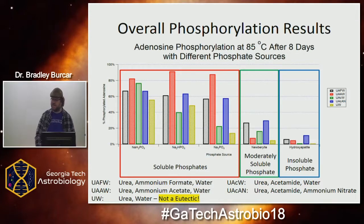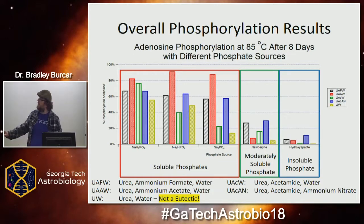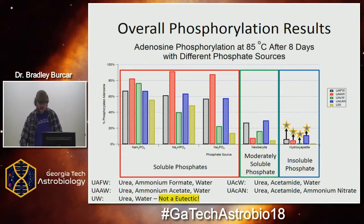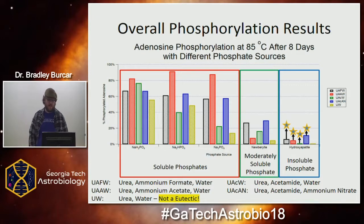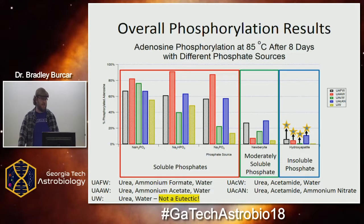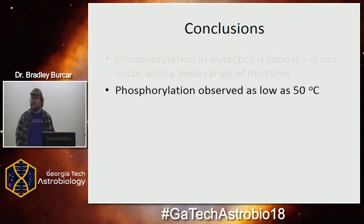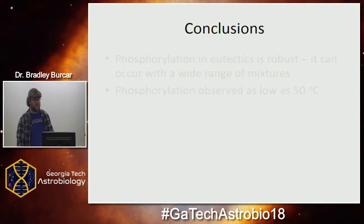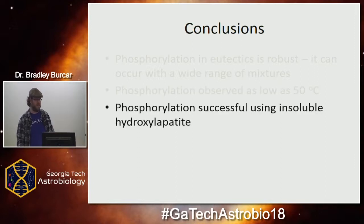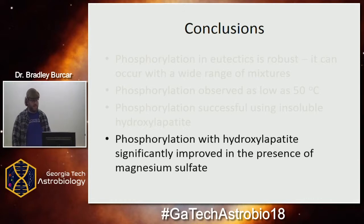You can't expect 100% yields from everything. One of the most remarkable things is with the hydroxyapatite we get a small amount of phosphorylation — better than what is shown with just urea, where you get none. And even more interestingly, when we add magnesium sulfate to the reaction, we see a doubling or tripling of the amount of phosphate. So we take these eutectics, just add some magnesium sulfate, and we get a good amount of phosphorylation, helping to address a long-held problem in prebiotic chemistry. The phosphorylation is robust, happening in a wide range of mixtures at moderately low temperatures as low as 50 degrees, which is very easy on a prebiotic Earth. It's successful with insoluble hydroxyapatite and significantly improved in the presence of magnesium sulfate — these are very prebiotically viable conditions.